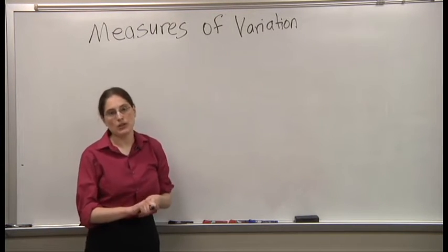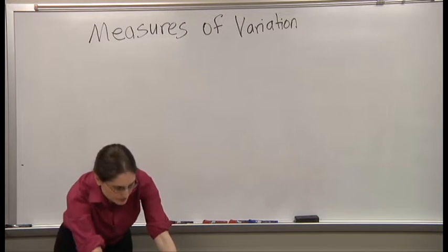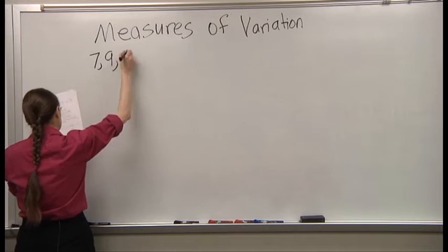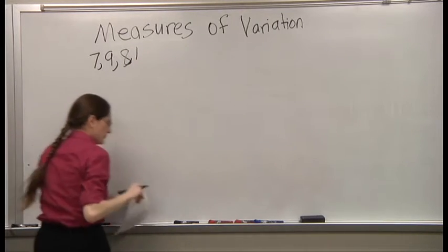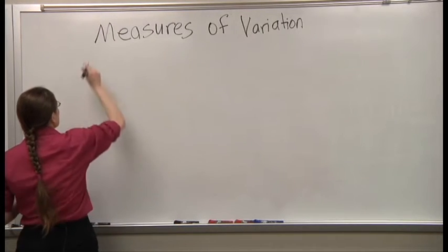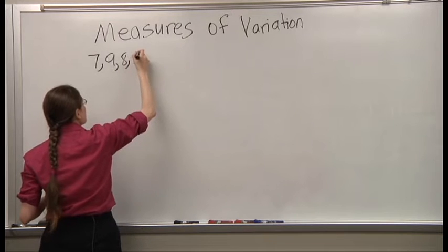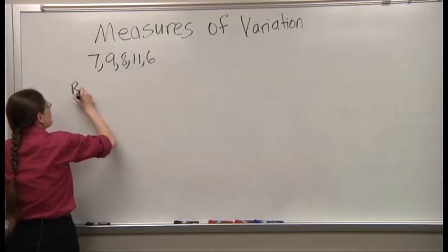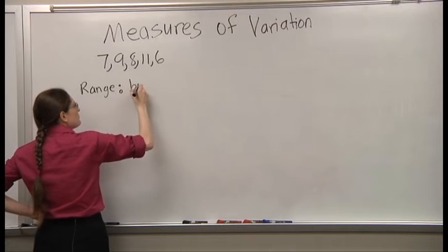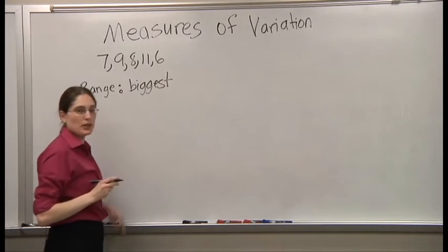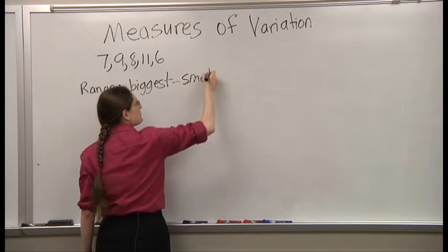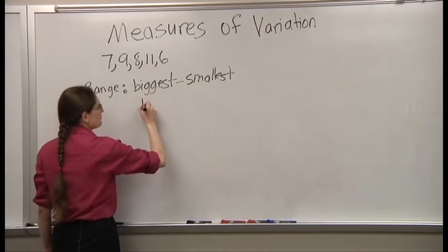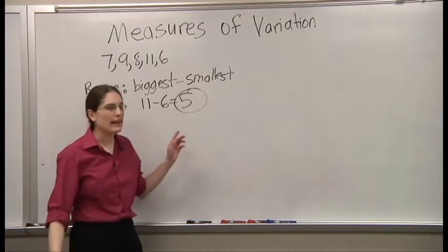There's a couple measures of variation that we're going to learn about. The first one is pretty easy. First measure of variation is range, which is the biggest number minus the smallest number. The advantage of this one is that it's very easy to find. Subtract, and you're done.